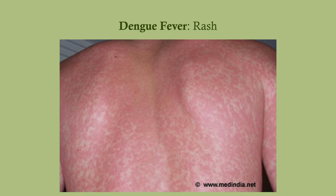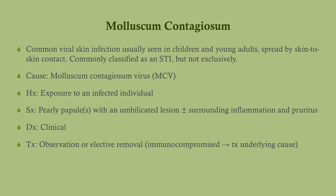So if you have a patient who's in Mexico or South America with bone pain, arthralgias, a rash like this, and high fever — it's dengue.